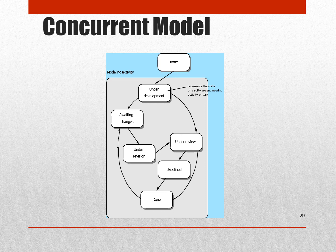The concurrent model works based on stages — communication, planning, modeling, coding, and deployment. There may be different states such as under development, awaiting changes, revision, review, baseline, and done. Based on these different stages, each process model stage can be tracked, and once the changes have been adopted, it will move from the 'under development' stage to the 'done' stage.